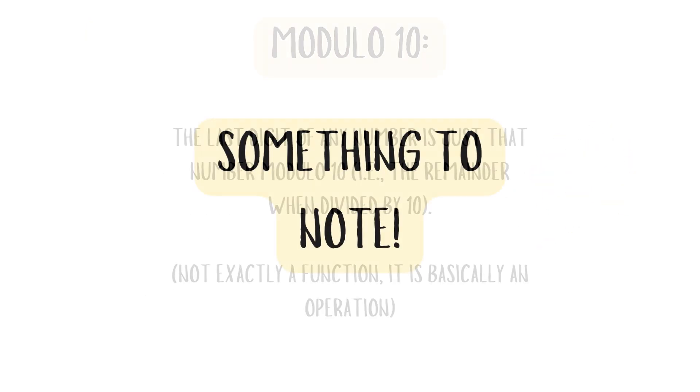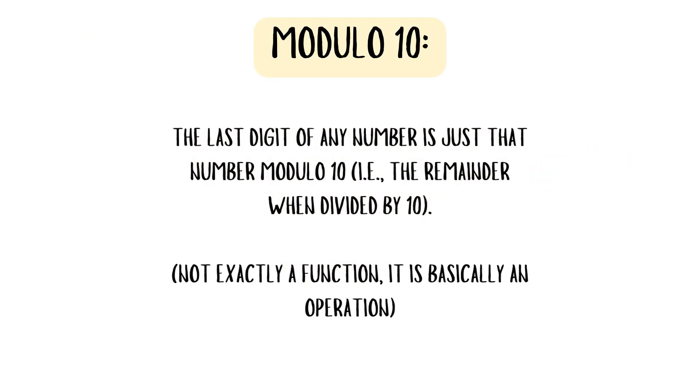So we're going to start with something to note. We're going to be looking at modulo 10, which is a function we will be using throughout this video. The last digit of any number is just that number modulo 10, which is the remainder when divided by 10.